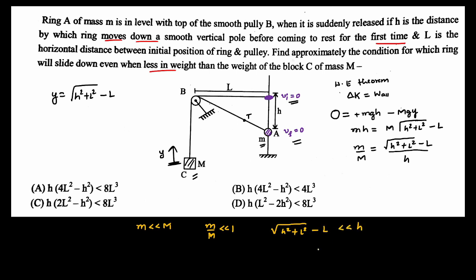Now we will use approximations as we usually do. So we will take L outside from this. Then it becomes like h squared by L squared plus one, whole power one by two, minus L, much much lesser than h.